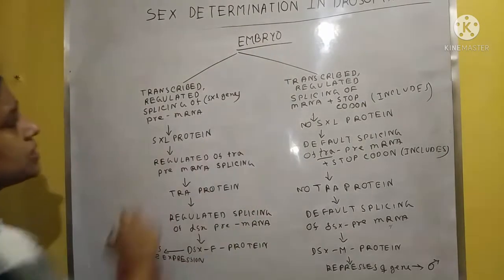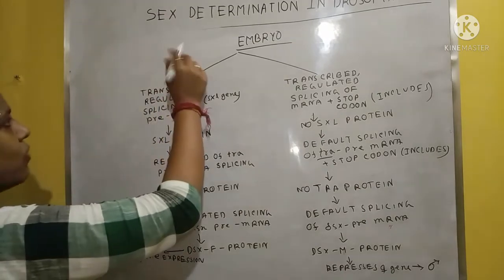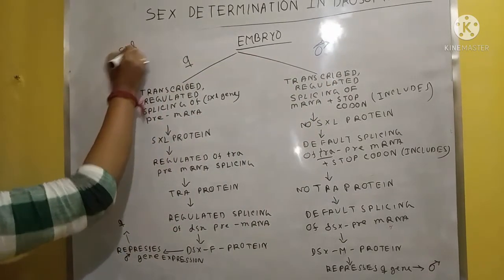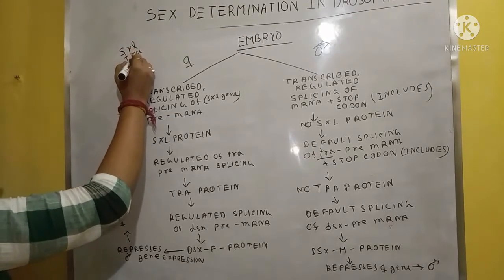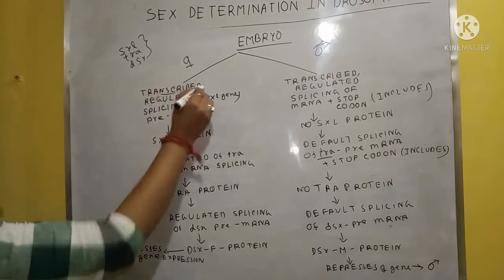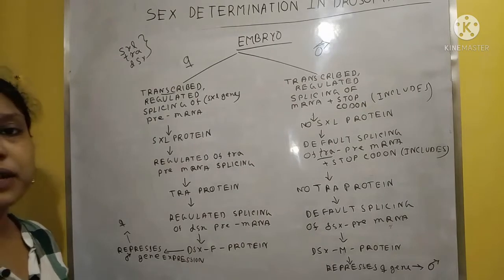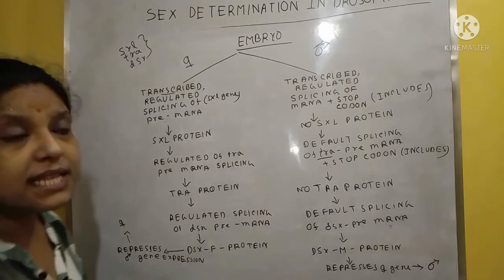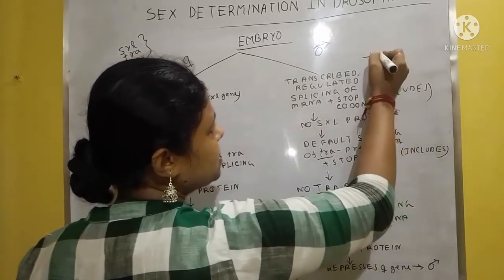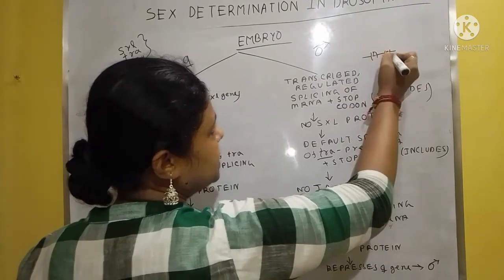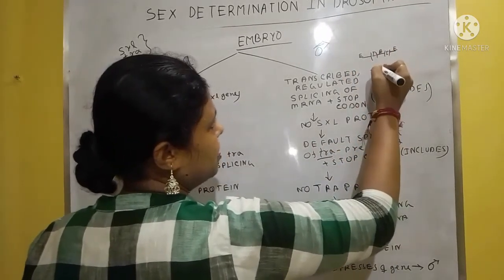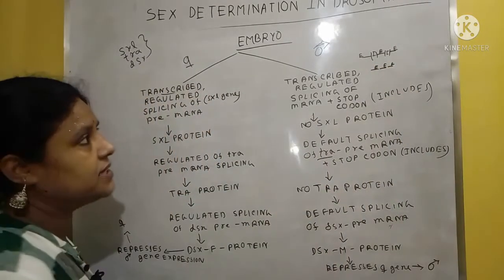In the embryonic condition, how it is determined to become female or male — three things are very important: SXL, tra, and DSX. In the first situation, during transcription — which means RNA synthesis — the splicing process is important. In splicing, exons are attached together and introns are separated. When splicing occurs in the SXL gene, the SXL protein is formed.